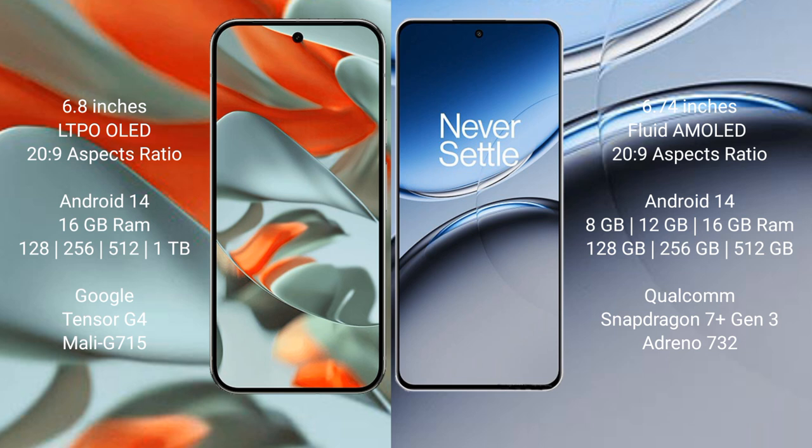Google Pixel 9 Pro XL runs on the Android 14 operating system. OnePlus Nord 4 also runs on the Android 14 operating system.